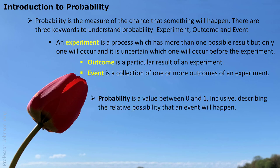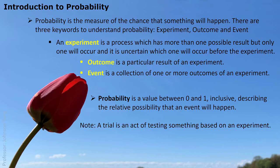Probability is a value between zero and one inclusive. The lowest situation would be zero — no chance — meaning something is not going to happen. The highest situation, the maximum, would be one hundred percent, which is one. So the probability must be a number between zero percent and hundred percent, that is between zero and one. A trial is an act of testing something based on an experiment.